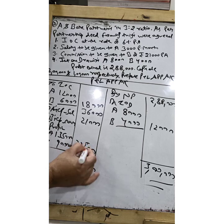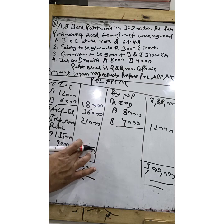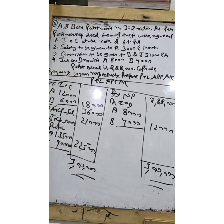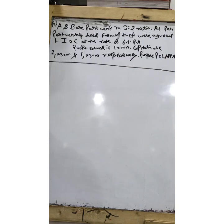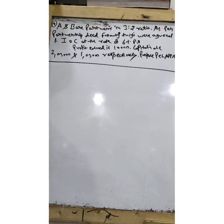I am making small changes to each question so that you get a thorough understanding of the concepts rather than just memorizing a format. It is better to practice different types of questions. Now we have our fourth question — it looks very short and simple but trust me, it will teach you something very important and tricky. A and B are partners in 3:2 ratio. Interest on capital at 6% per annum. Profit earned is ₹10,000 and capitals are ₹2 lakh and ₹1 lakh respectively. Prepare P&L appropriation account.